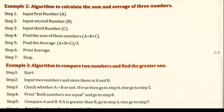The algorithm to calculate the sum and average of three numbers: first, second, third — input three numbers; then find the total; then find the average; then print the result; then stop — work complete.